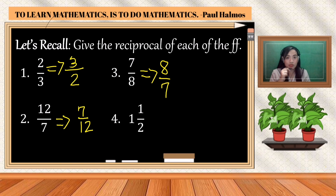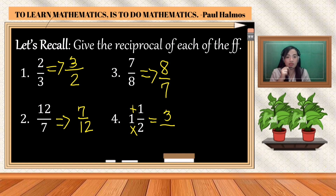Number four: the given is one and one-half. This is a mixed number, so before we get the reciprocal we have to convert it into an improper fraction. Multiply the denominator by the whole number: two times one is two, then add the numerator: two plus one is three. Copy the denominator, which is two. Now we can get the reciprocal: the reciprocal of three over two is two-thirds.